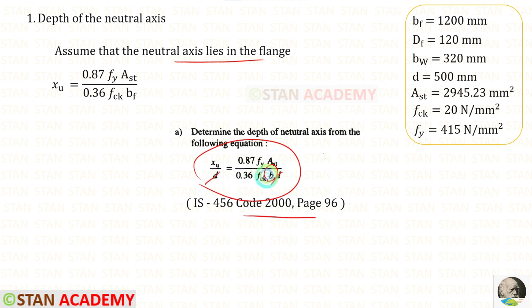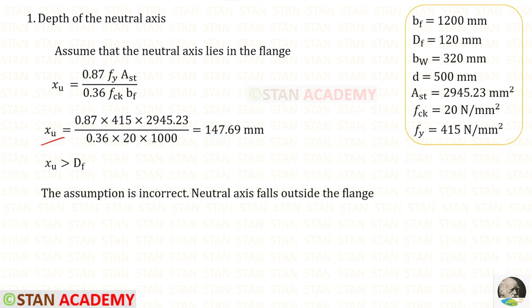Instead of B, we have to apply BF. For XU, we will get 147.69 millimeter. Depth of the flange is 120 millimeter. XU is greater than DF. In this case our assumption is incorrect. Neutral axis falls outside the flange.